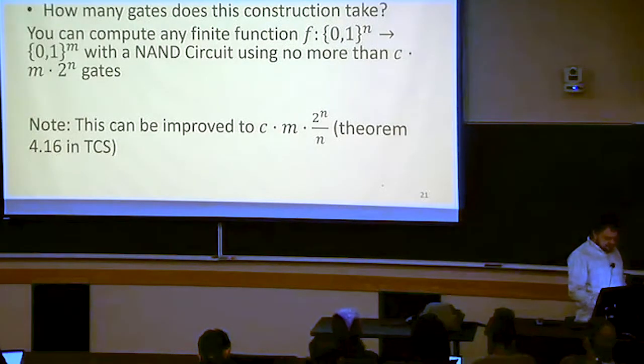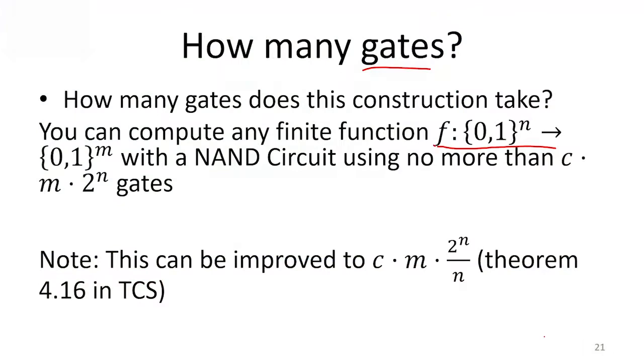Let's say that I have this finite function with n inputs and m outputs. I'm going to show you that this can be done in c times m times 2 to the n gates.